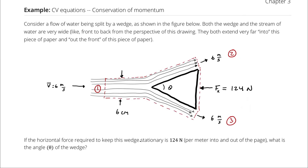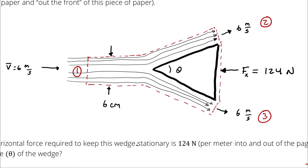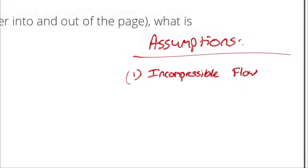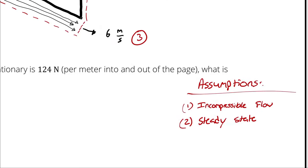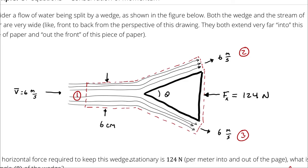I was told an average velocity at state 1, and I'm going to assume that both states 2 and 3 have the same average velocity. Since I'm assuming incompressible flow, the volumetric flow rate at state 1 must equal the volumetric flow rate at state 2 plus state 3, for steady state. That means the cross-sectional area at states 2 and 3 are each half of the cross-sectional area at state 1. Remember that for later.